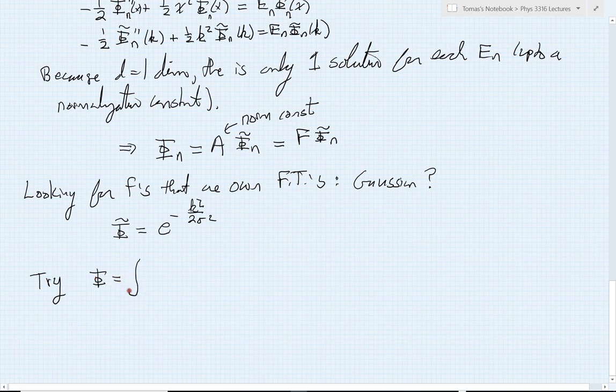φ then would be integral dk of φ tilde k, which is my Gaussian, times then the pure states of momentum, e to the ikx divided by the square root of 2π. And so we can go ahead and calculate this Fourier transform.